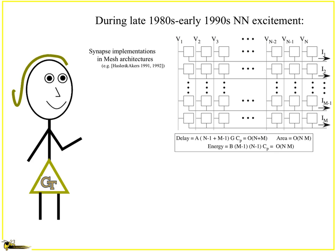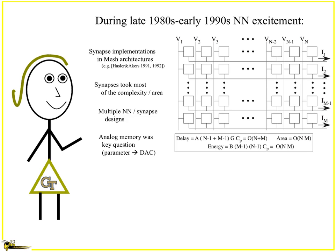This became really important because when you start to go back to the late 1980s and early 1990s when we had the early neural network excitement, there were certain things that were understood by this point. One is that you wanted to implement things in mesh architectures and that turned out to give you the optimal way to build synapses. We also knew that synapses took most of the complexity.